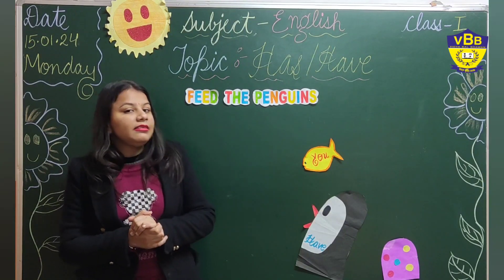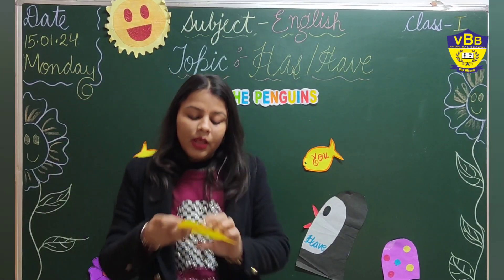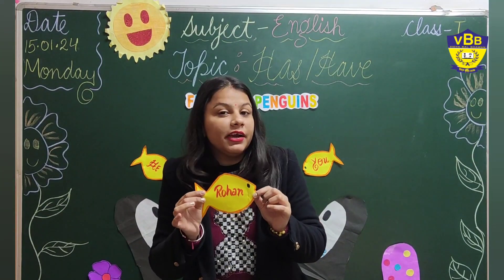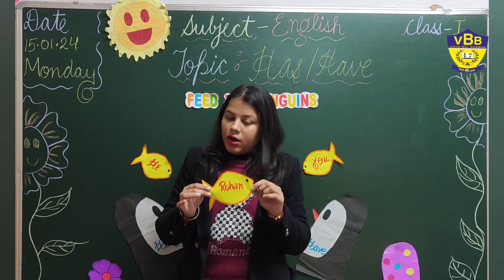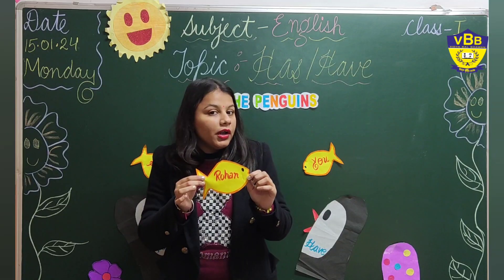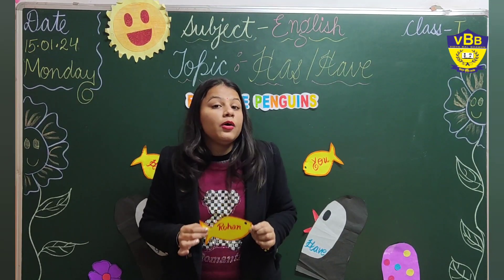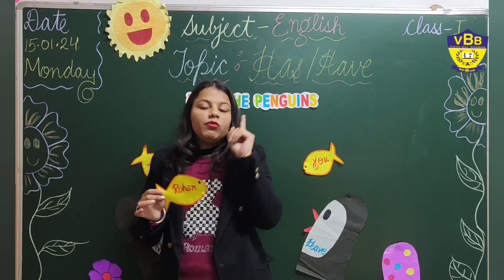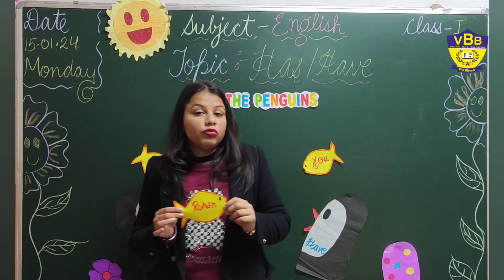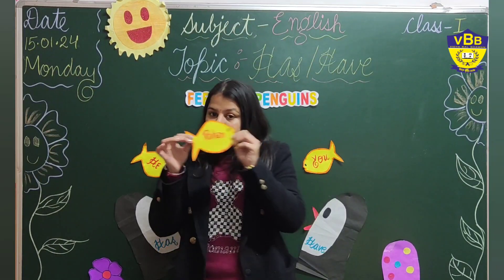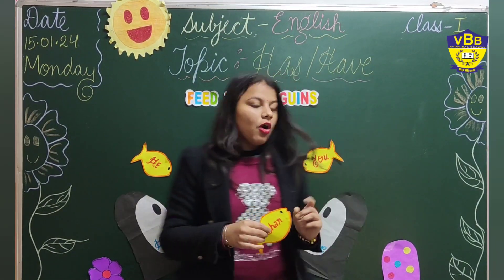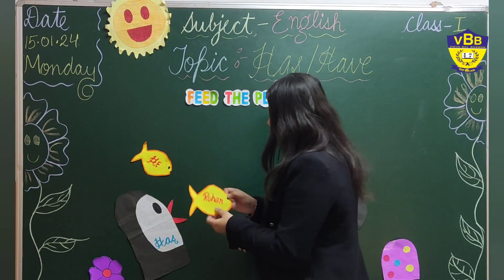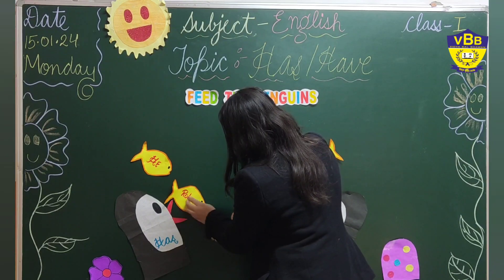Now let's take one more example. What is written on this fish? Rohan. And here we are talking about only one single Rohan — only one boy. So which penguin will eat this fish — 'has' or 'have'? Yes, the 'has' penguin. So we will put it there.